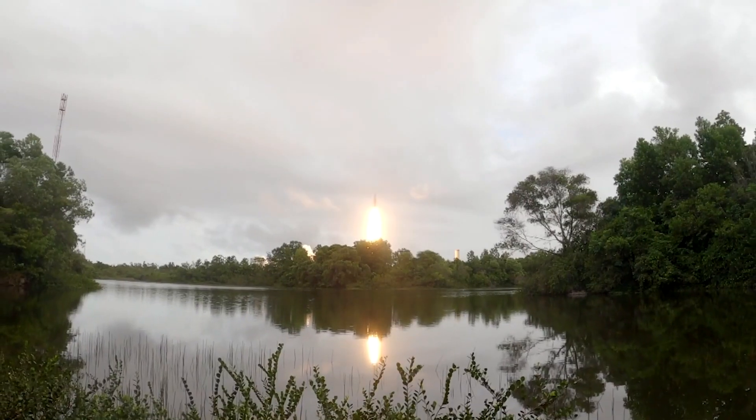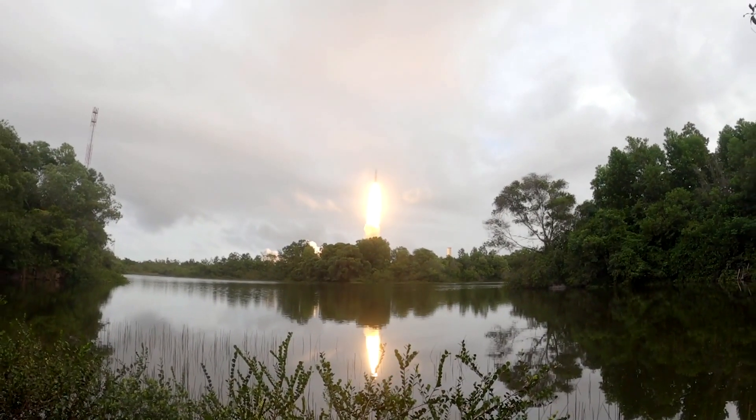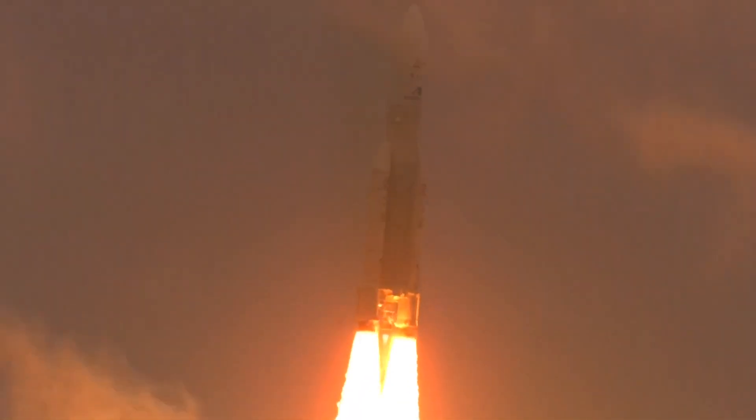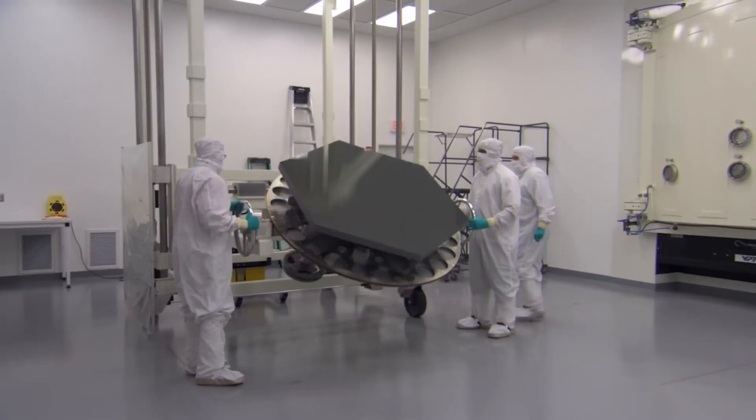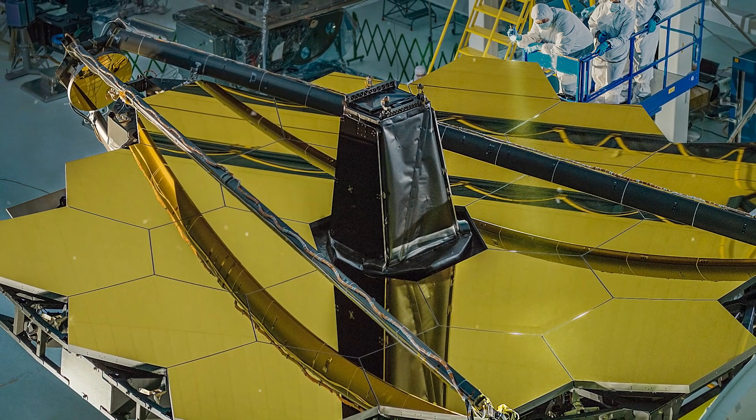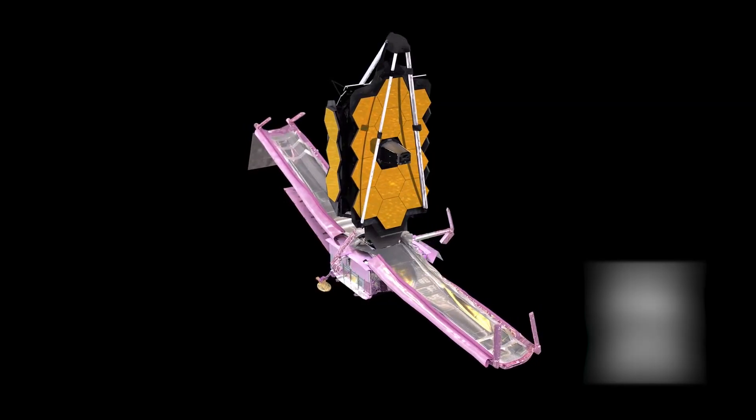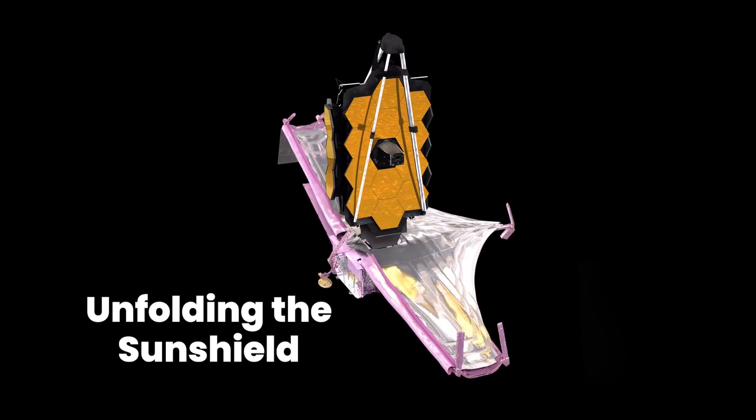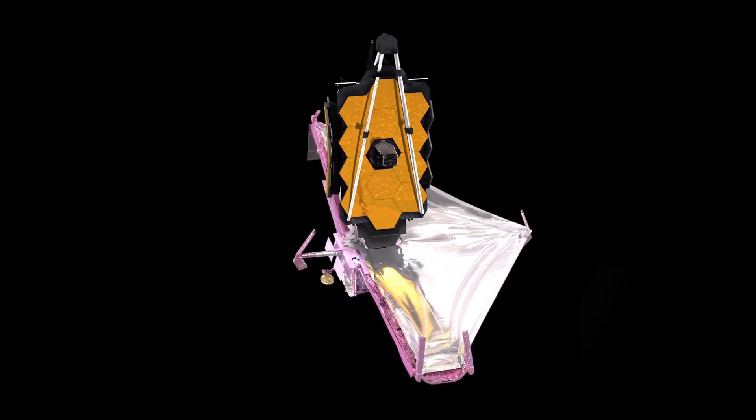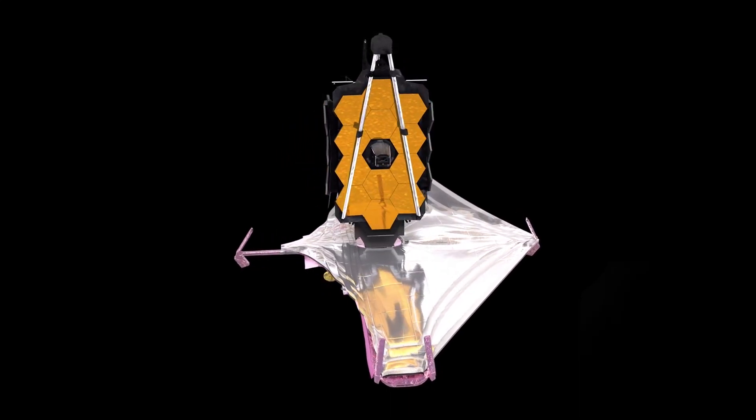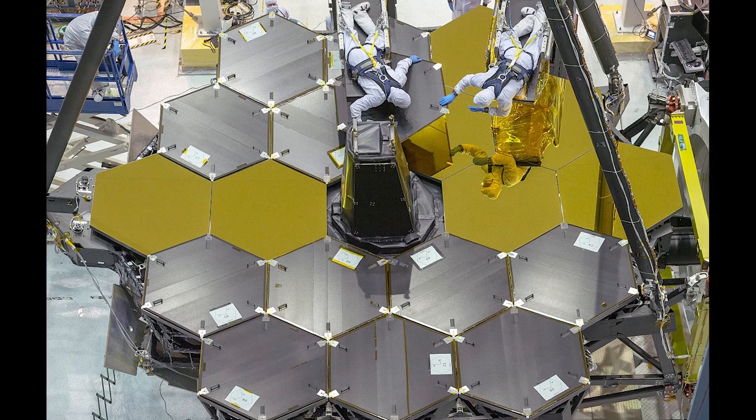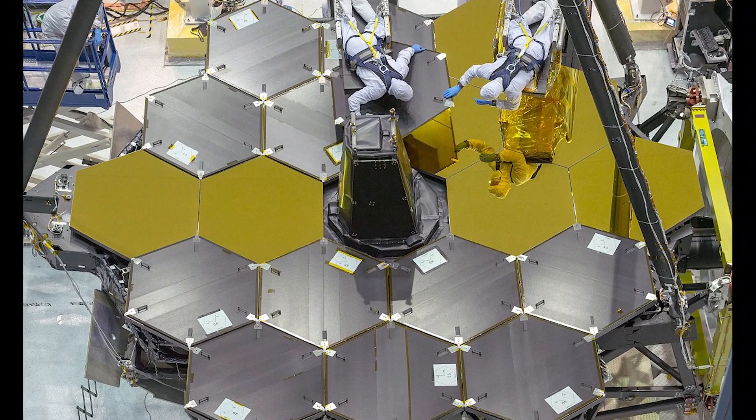Following the successful deployment of the Sunshield, the next crucial step was deploying the telescope itself. The primary mirror, consisting of 18 hexagonal segments, had to be accurately aligned to produce sharp images. This intricate process involved unfolding the Sunshield, extending the telescope's support structure, and gradually deploying the primary mirror. Precise alignment was essential to avoid potential losses exceeding $10 billion.